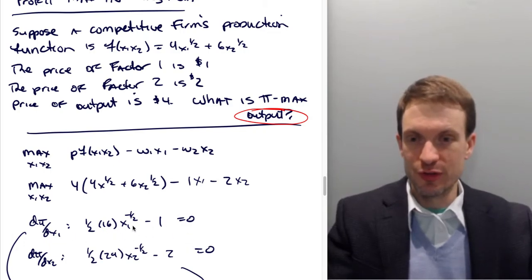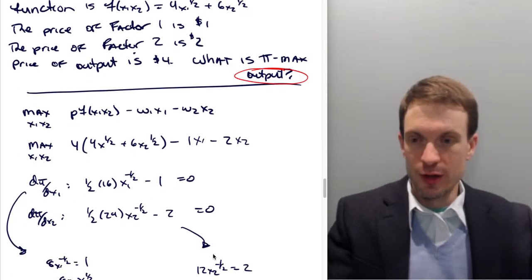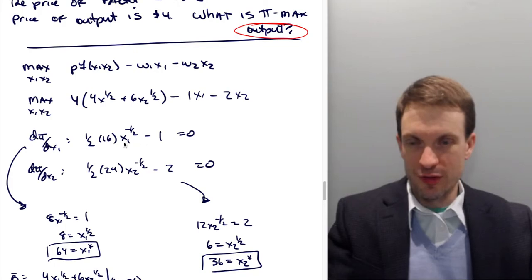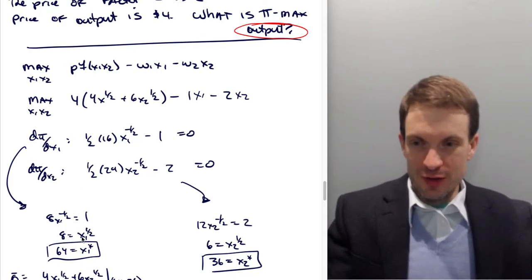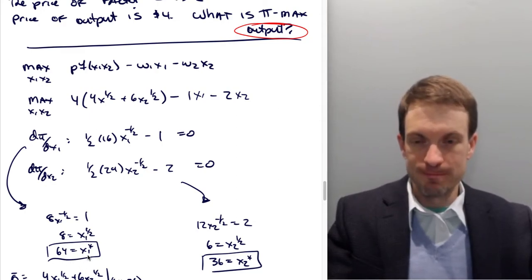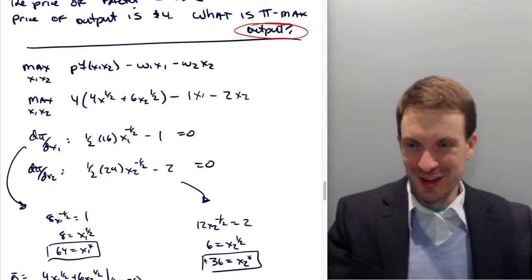Solving each of these first order conditions separately, we'll have 8 times square root of x1 equals 1. That's 8 is equal to square root of x1. Squaring both sides, 64 is x1. And then over here, 12 is equal to square root of x2 is equal to 2. Dividing through, 6 is equal to square root of factor 2. Then squaring both sides, 36 is equal to the amount of factor 2. We're going to use 36 units of factor 2.